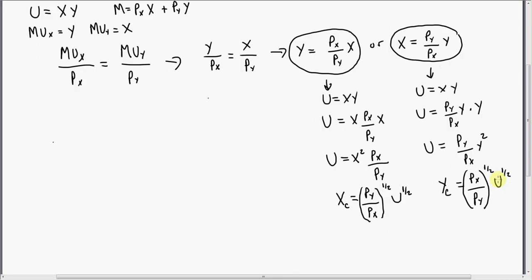So that's how you solve compensated demand functions. Now let's get our regular uncompensated demand functions. Let me take this expression and rewrite the other expression, this time solving it for X. So to get the regular uncompensated demand functions, we're going to take this and plug it into the budget constraint.